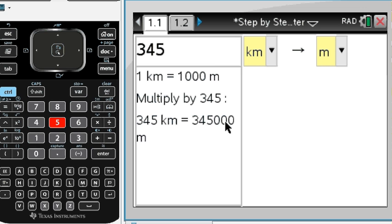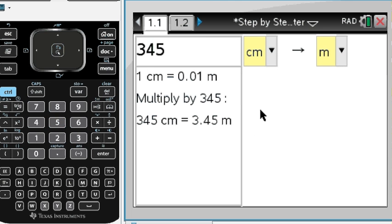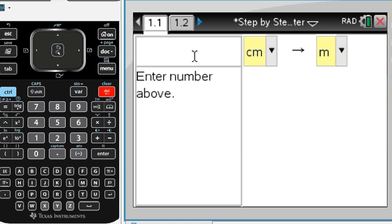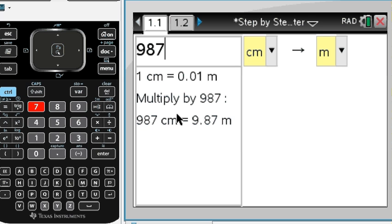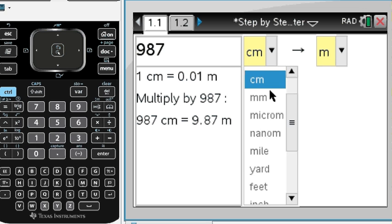If you don't have kilometers but let's say you go from centimeters to meters, well one centimeter is 0.01 meters. Multiply by 345 or by whatever number you like to have. Then you see that 987 centimeters are therefore 9.87 meters. So you see it's very straightforward.